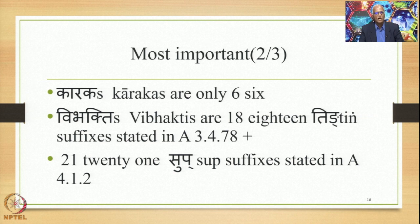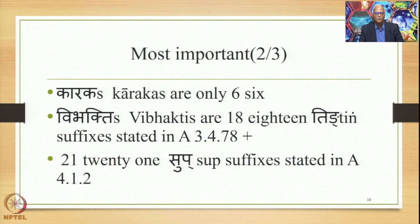Karakas are meanings — there are only 6. Vibhaktis are 18 Ting suffixes stated in Ashtadhyayi 3.4.78 and 21 Sup suffixes stated in 4.1.2. In other words, Vibhaktis are the Pratyayas and Karakas are the Pratyayarthas that we have studied in this lecture. Vibhaktis are Pratyayas and Karakas are the Pratyayarthas.